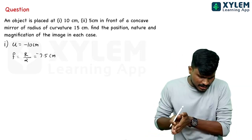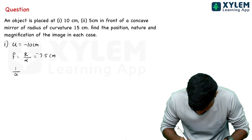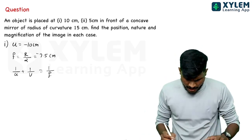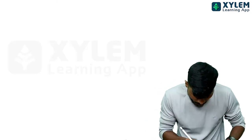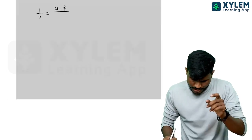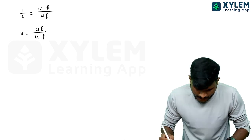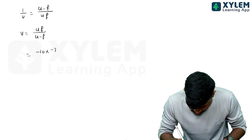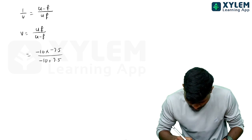This is the mirror formula: 1/u plus 1/v equals 1/f. Rearranging, 1/v equals 1/f minus 1/u. Cross-multiplying: 1/v equals u minus f divided by uf. Taking the reciprocal, v equals uf divided by u minus f.